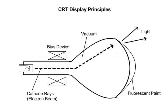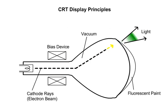The CRT display uses an electromagnetic field and electrodes to direct the beam of electrons. When the electrons hit the display surface, the places where they hit glow due to the fluorescent material applied to the surface. The CRT that is probably most familiar to all of us is the TV picture tube.